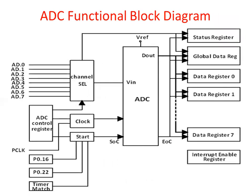We can see the ADC functional block diagram. This shows the ADC along with the status register, global data register, data registers 0 through 7, and interrupt enable registers. The ADC control registers accept inputs AD0 to AD7 for channel selection. A clock is required, and from P0.16 to P0.12 we can start using the timer matching device.